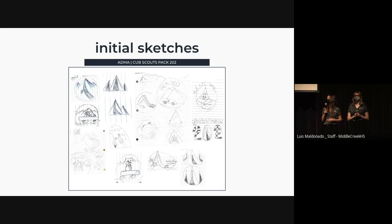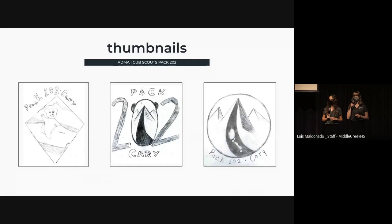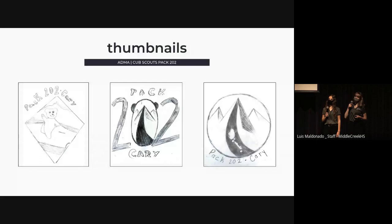My first design depicts a bear cub riding on a derby car with mountains in the background. This logo is definitely not the simplest, but it is cute, memorable, and emphasizes that these are the Cub Scouts. For my design in the middle, I wanted the design elements to be inside of the pack number, so I put mountains inside of the logo that can also be seen as a tent, and I added bear ears onto the zero. For my last design, I wanted to include the Pinewood Derby track with a car and mountains in the background. The mountains can be seen as tents, and I included the car because it has a better chance of being seen when shrunken down.